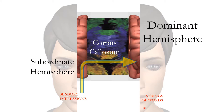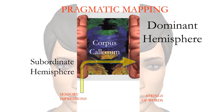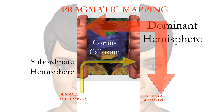Meanwhile, just as Einstein put it back in 1941, the commutable signs of language — strings of words — have to be linked with the sensory impressions of physical reality through a process that I've called pragmatic mapping. It's the process by which strings of words are mapped into sensory impressions through the actions of the dominant hemisphere, communicated through the corpus callosum to the subordinate hemisphere, and at the same time produced in strings of words that are pragmatically mapped to sensory impressions of the world of experience.